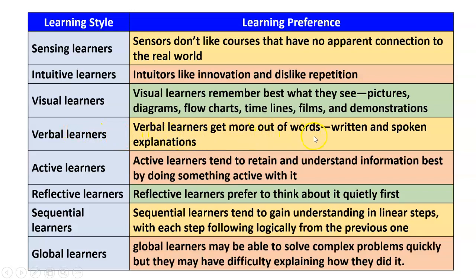Verbal learners get more out of words — written or spoken explanation. Active learners tend to retain and understand information best by doing something active with it; they are good problem solvers and will be good at doing experiments or research. Reflective learners prefer to think about it quietly. Sequential learners tend to gain understanding in linear steps, with each step following logically from the previous one. Global learners may be able to solve complex problems quickly but may have difficulty explaining how they did it — they can think overall and solve immediately.